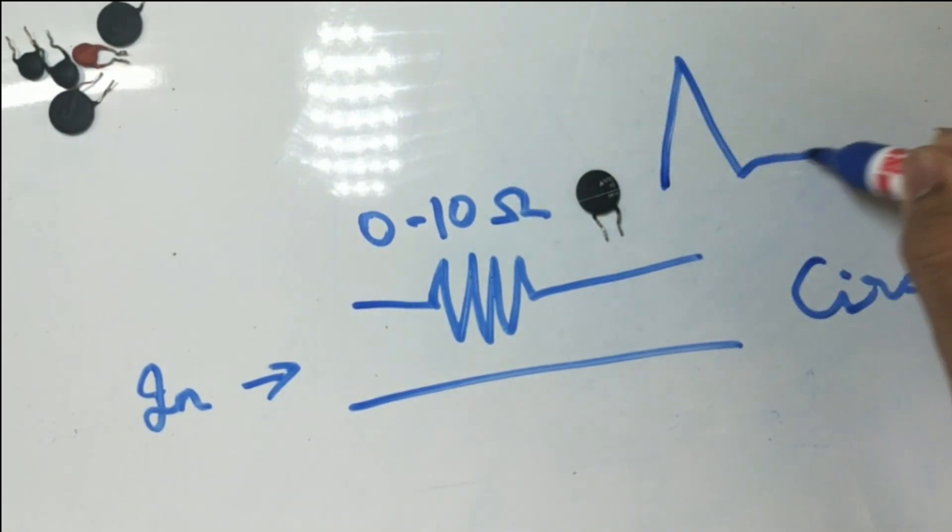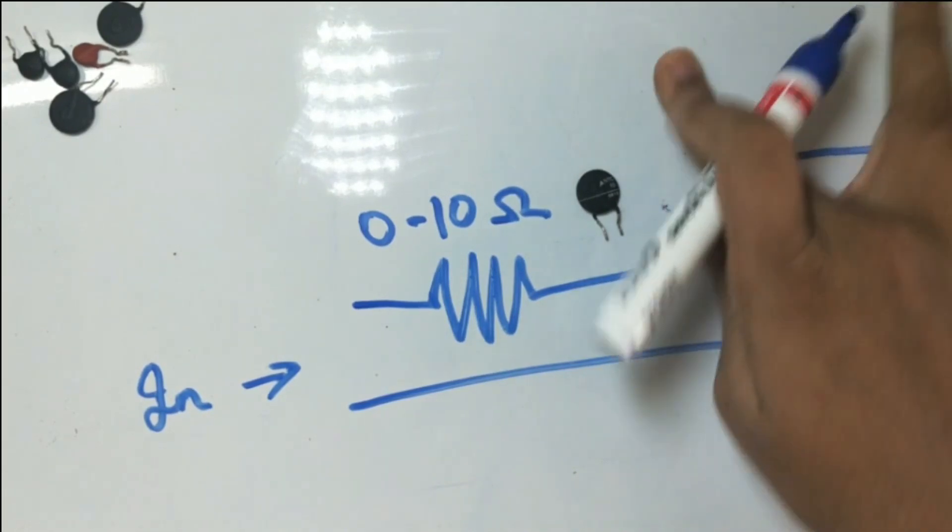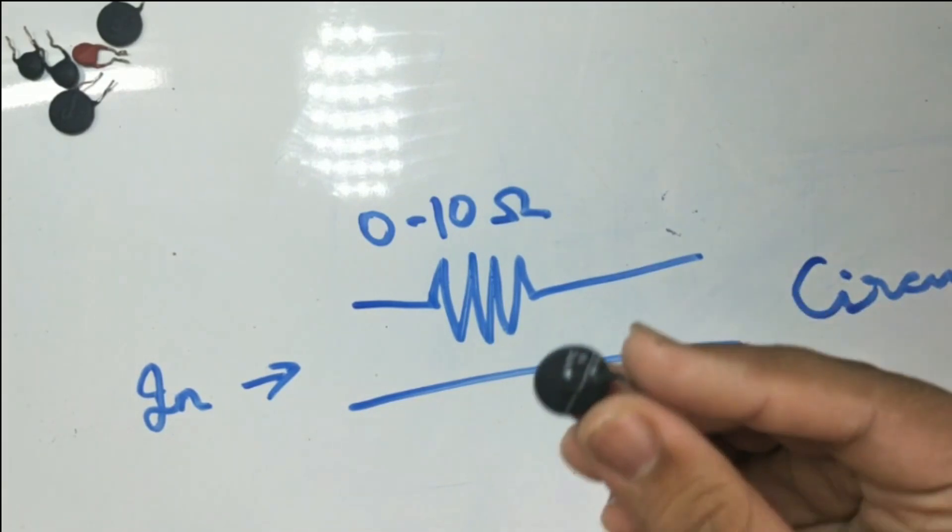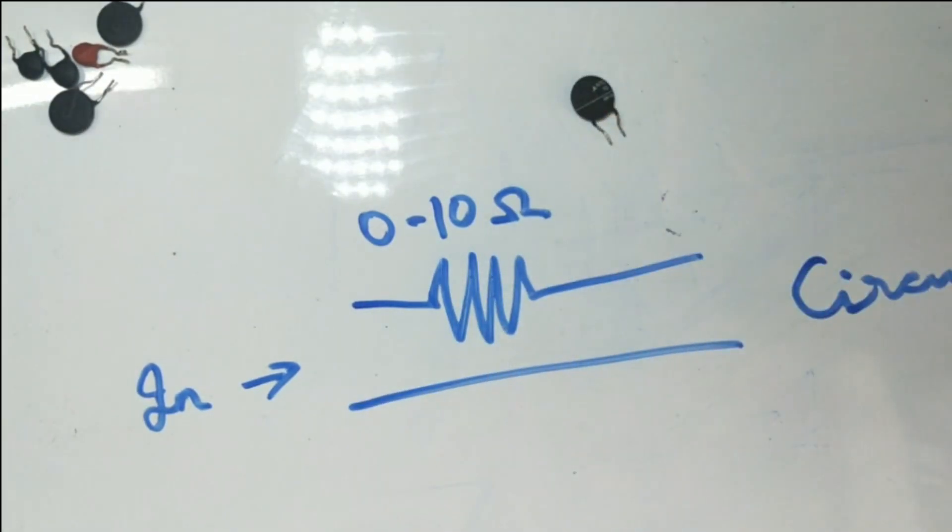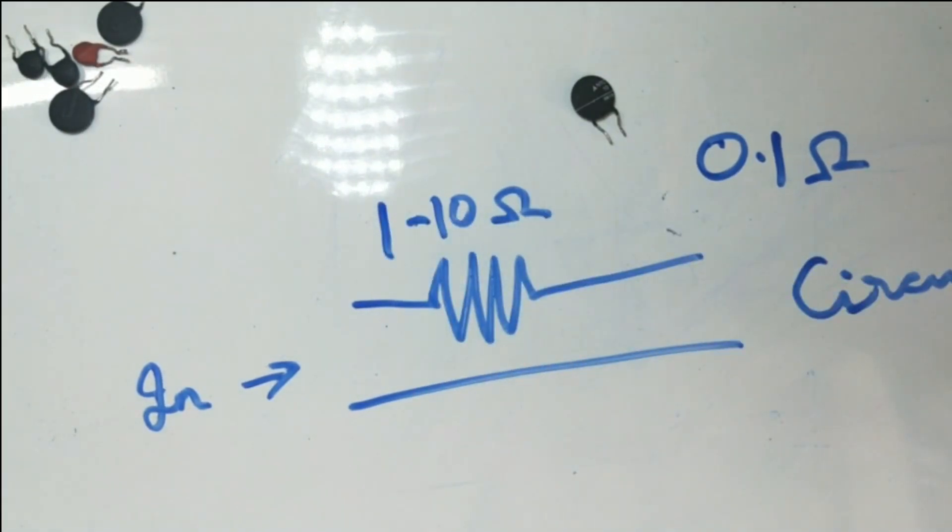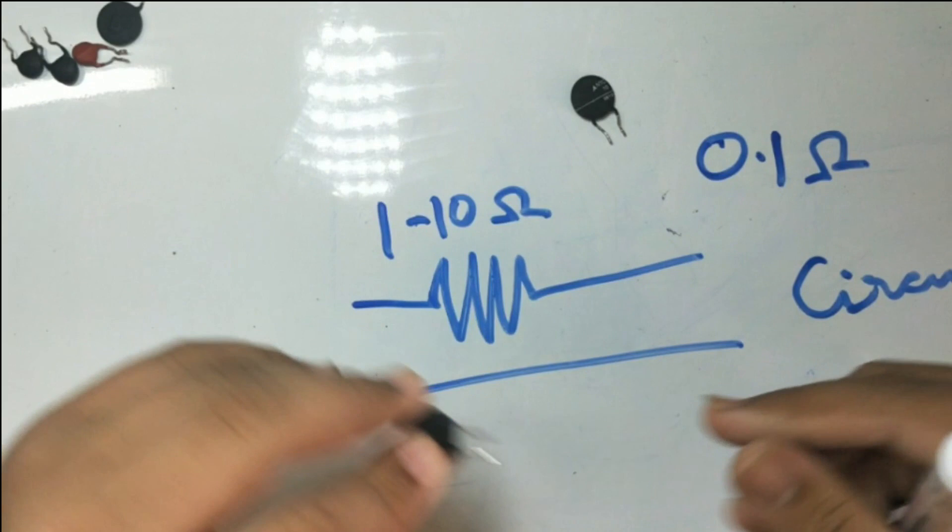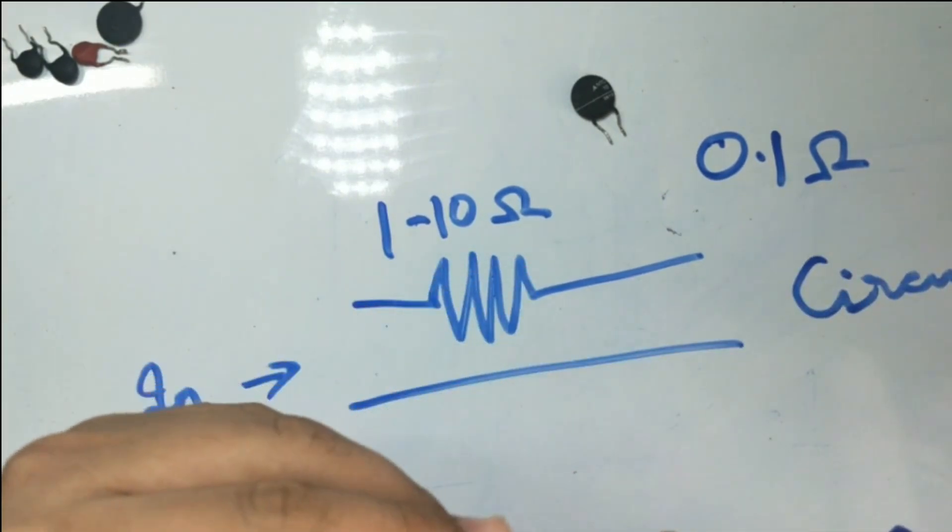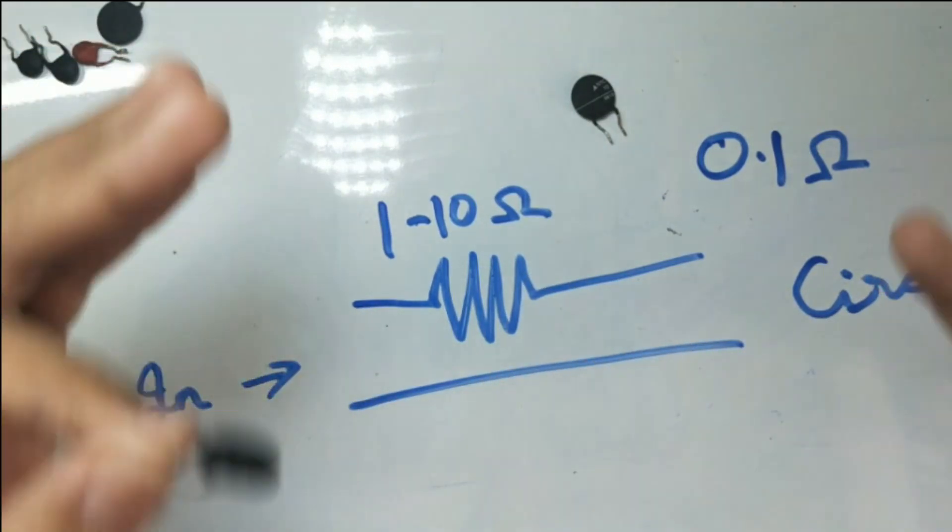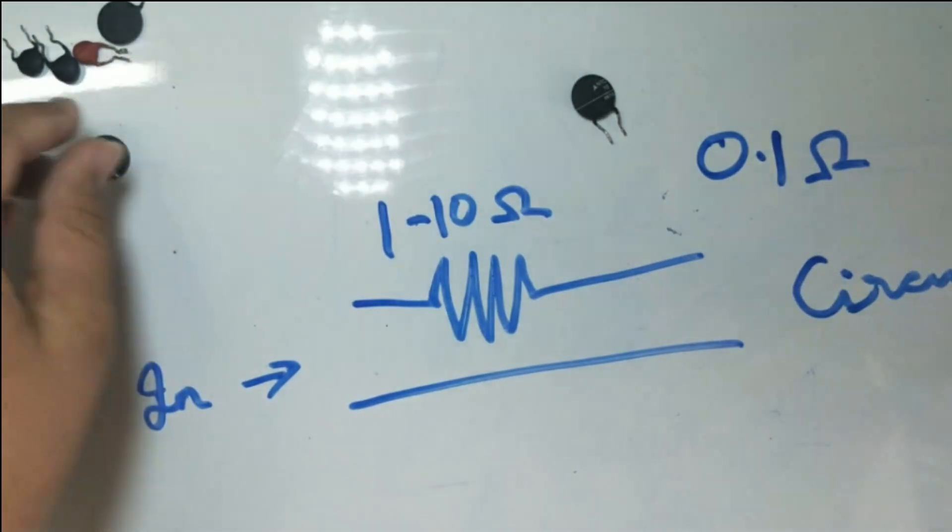As the circuit draws more current, then this would get heated up and its resistance would nearly drop to 0.1 ohm. Thus it would decrease the loss of energy. It's a very good component as it could increase the life of your device.